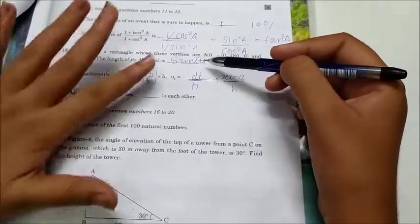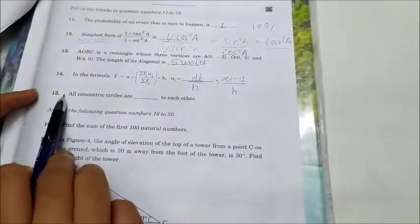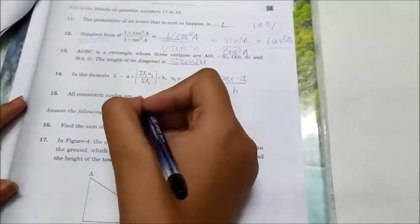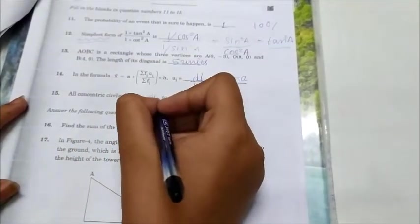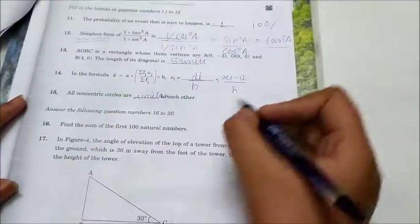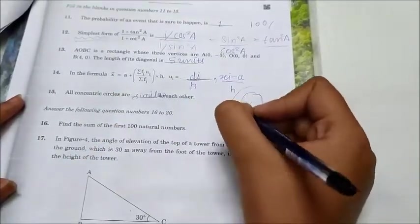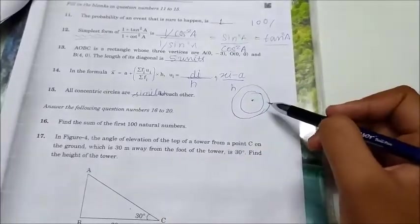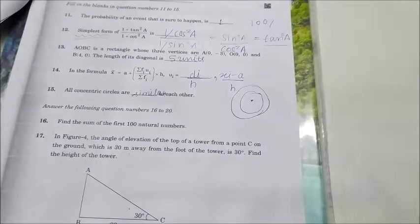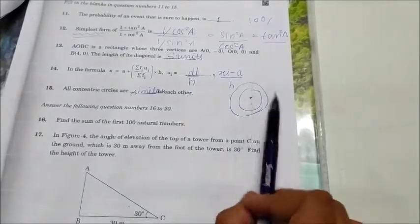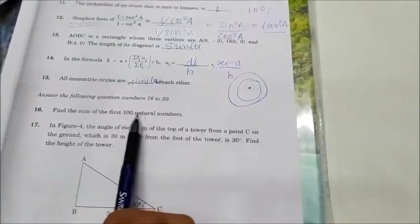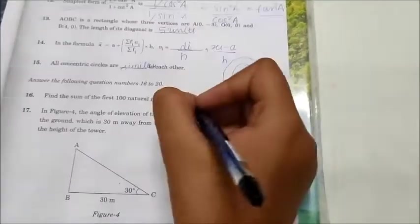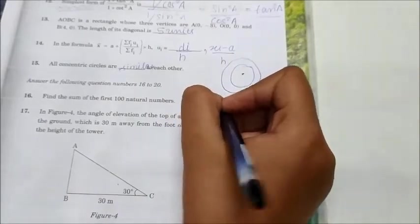Next question is question number 15: All concentric circles are similar to each other. Concentric circles are always similar to each other. The circles which have same point from which the radius starts are known as the concentric circles. Now find the sum of the first hundred natural numbers. I already explained it in set 2, it is 5050 by formula Sn = n/2(a + l).